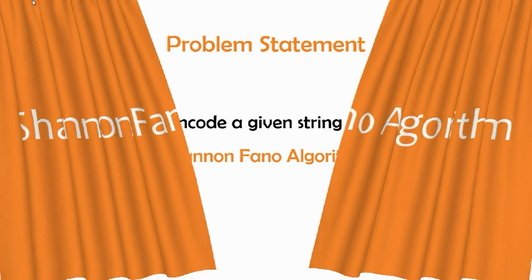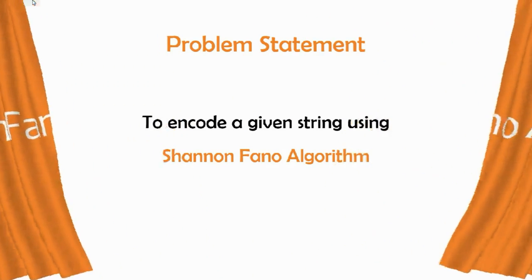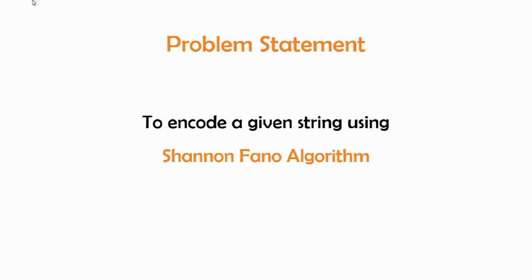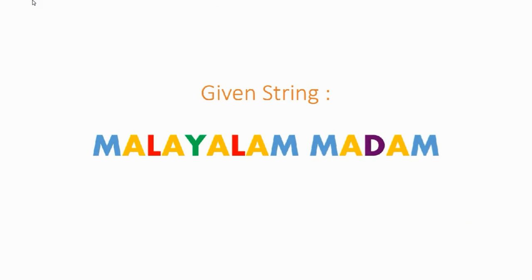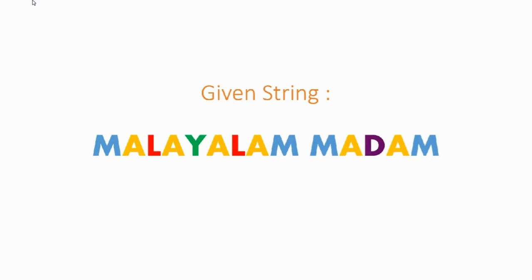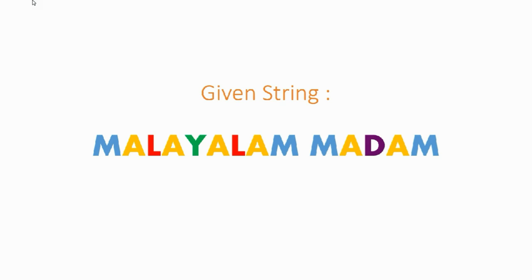The problem statement is to encode a given string using the Shannon-Fano algorithm. The given string is 'Malayalam Madam', which spells as M-A-L-A-Y-A-L-A-M M-A-D-A-M, and is 15 characters long.